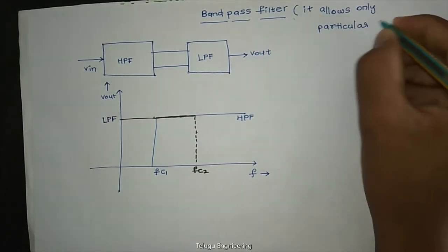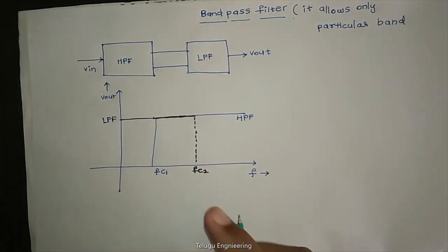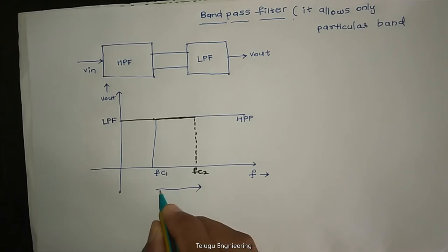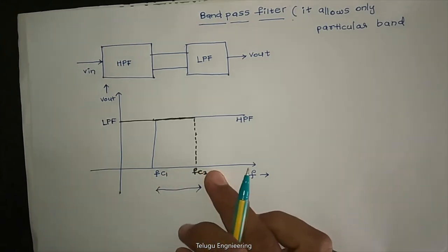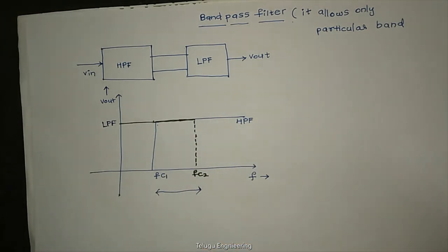It allows only a particular band of frequencies. Suppose we have this band - fc1 to fc2. This middle frequency range we want. So first, we send it through the high pass filter.